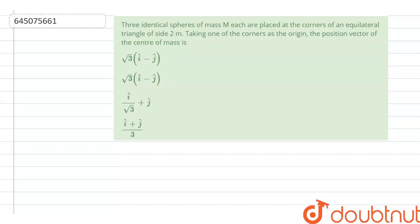Hello everyone, let's start the question. The question says that three identical spheres of mass M each are placed at the corners of an equilateral triangle of side 2 meters. Taking one of the corners as the origin, we have to find the position vector of the center of mass.